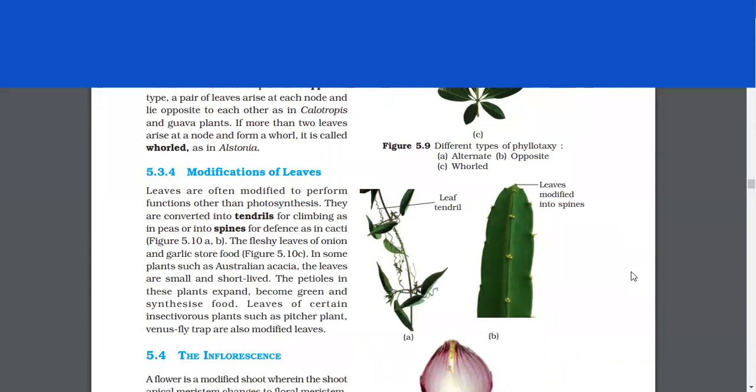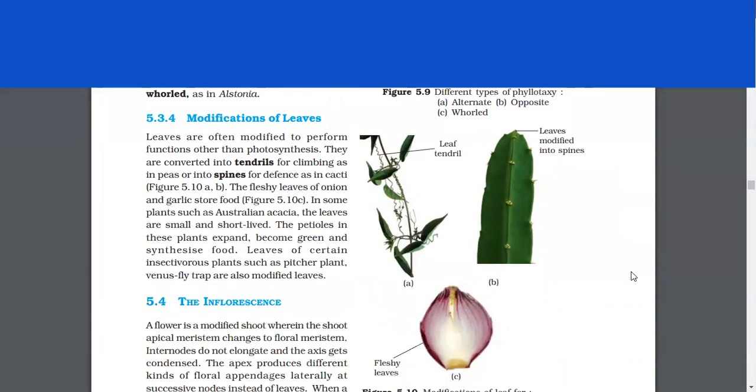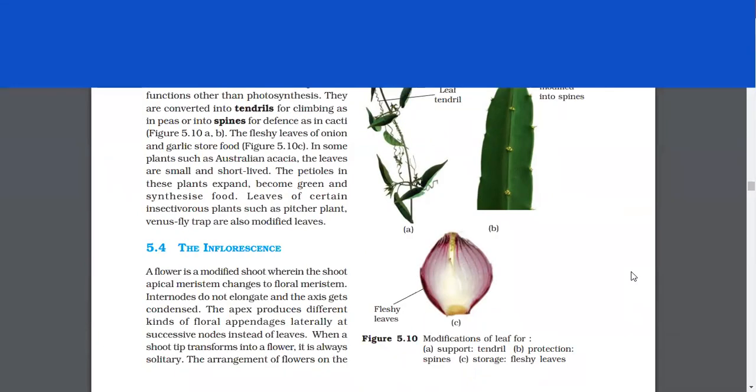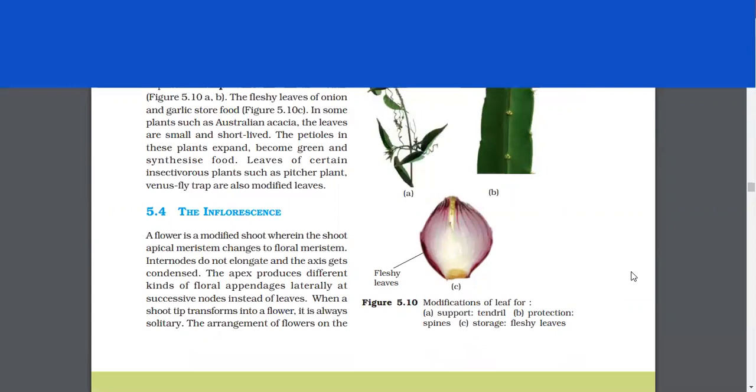Leaves are often modified to perform functions other than photosynthesis. They are converted into tendrils for climbing, as in peas, or into spines for defense, as in cactus. The fleshy leaves of onion and garlic store food. In some plants such as Australian acacia, the leaves are small and short-lived. The petioles in these plants expand, become green and synthesize food. Leaves of certain insectivorous plants such as pitcher plants, venus flytrap are also modified leaves.